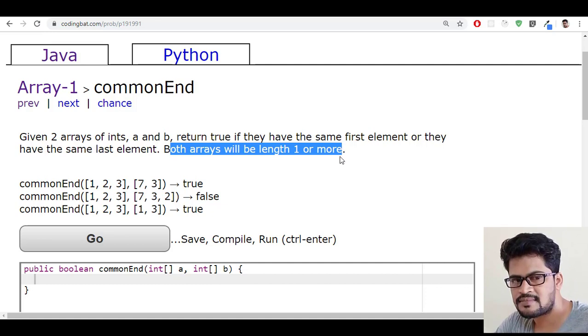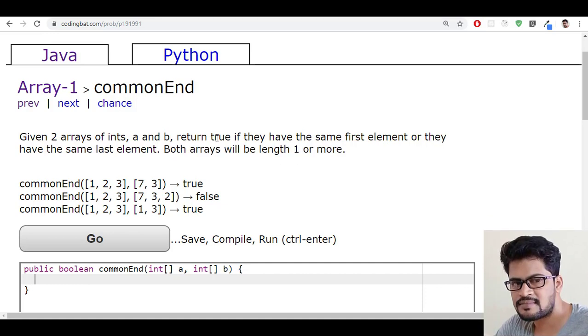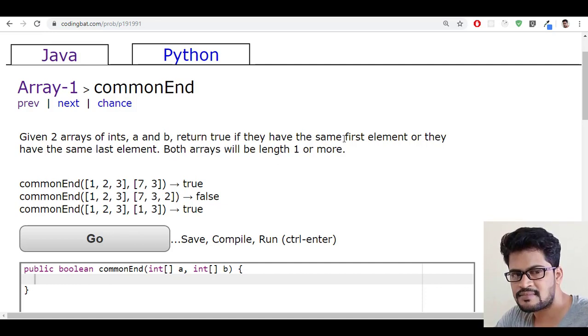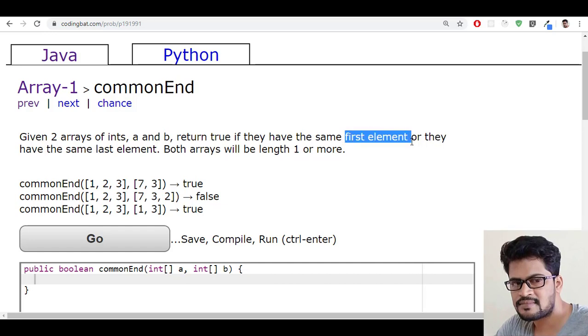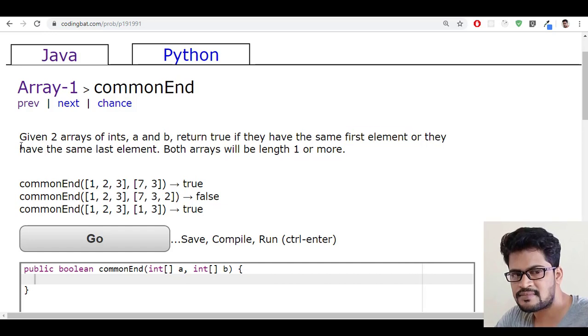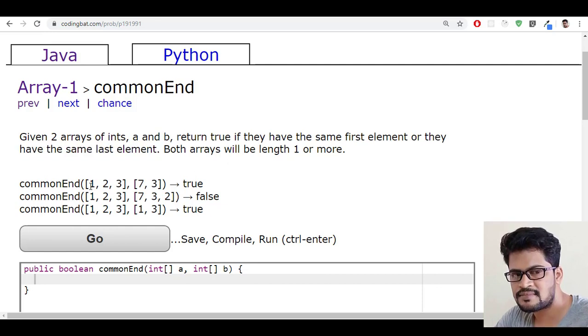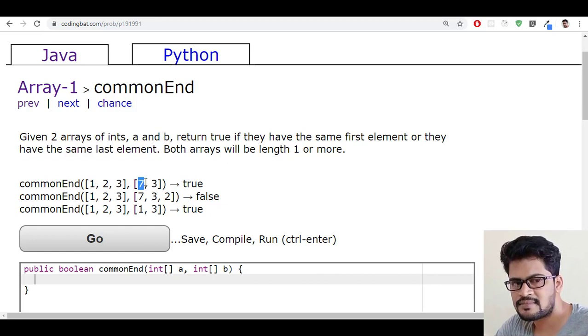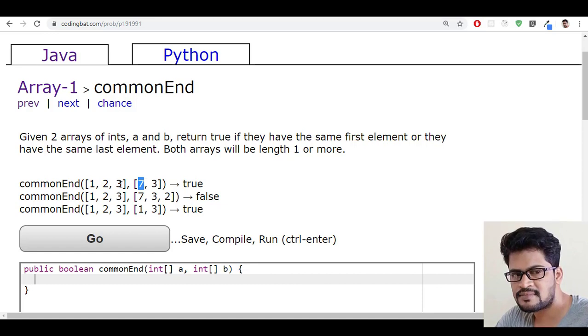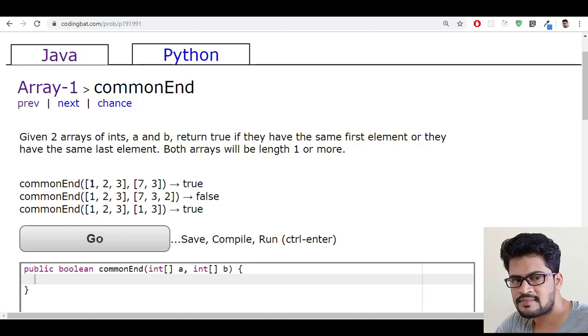Now the question is: return true if they have the same first element or the same last element. Either the first element of both arrays should be same, or the last element of both arrays should be same.